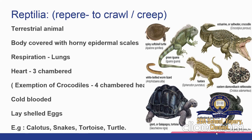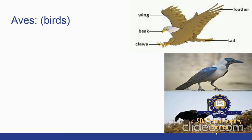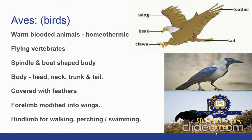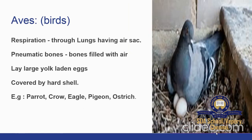Next class is Aves — birds. Birds are homeothermic (warm-blooded) animals with several adaptations to fly. The spindle or boat-shaped body is divisible into head, neck, trunk, and tail. The body is covered with feathers and the forelimbs are modified into wings for flight. Hind limbs are adapted for walking, perching, or swimming. Respiration is through two lungs. Bones are filled with air — pneumatic bones — which reduces body weight. They lay large yolk-laden eggs covered by a hard calcareous shell. Examples: parrot, crow, eagle, pigeon, and ostrich.